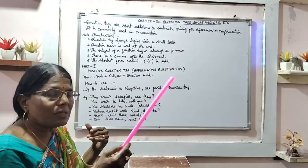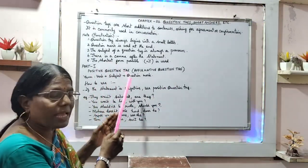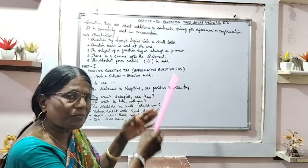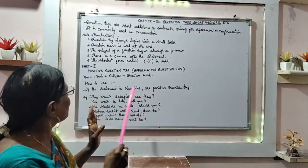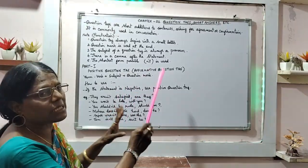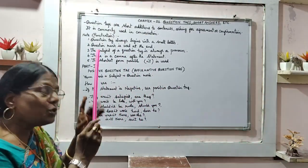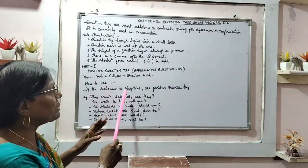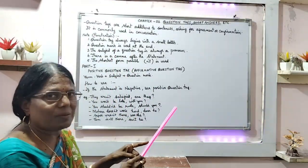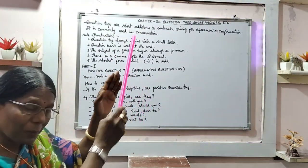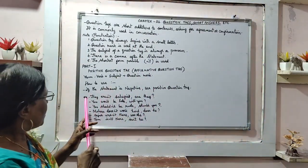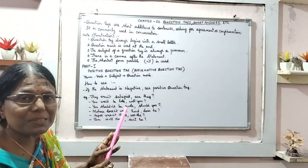Part 1. How the question tags are given? Positive question tag, that is called affirmative. Positive or affirmative question tag. How it is formed? Verb, subject and the question mark. How to use it? If the statement is negative, then you need to give positive question tag. Then, regarding positive statement, we will be dealing again. So, in that, some examples I have given.